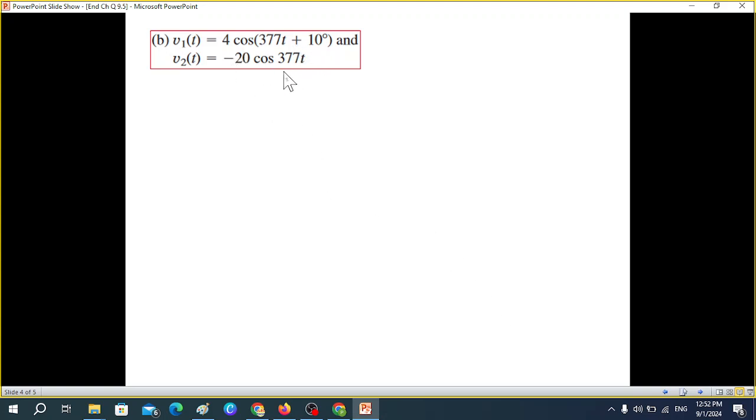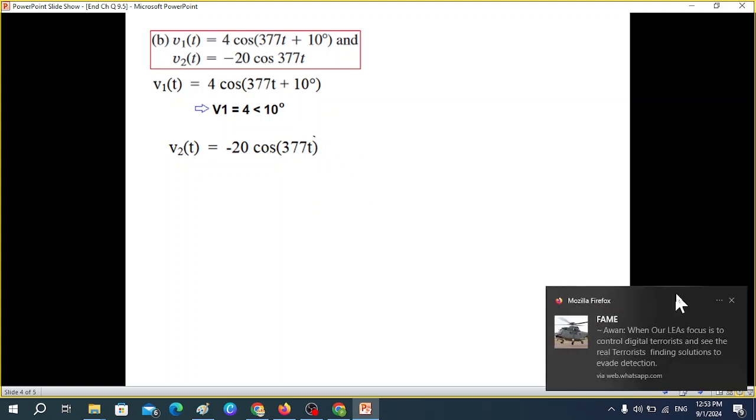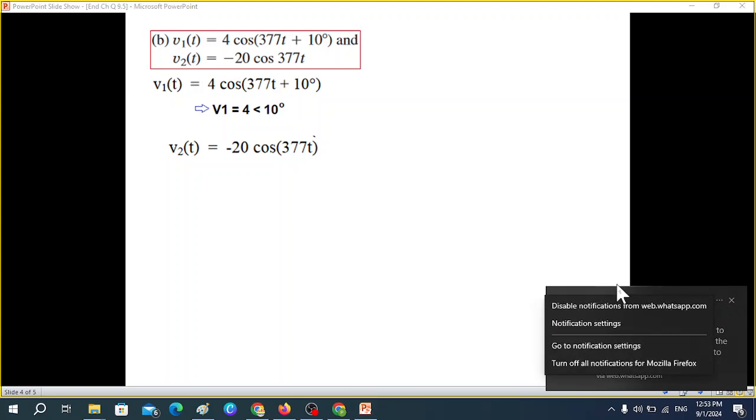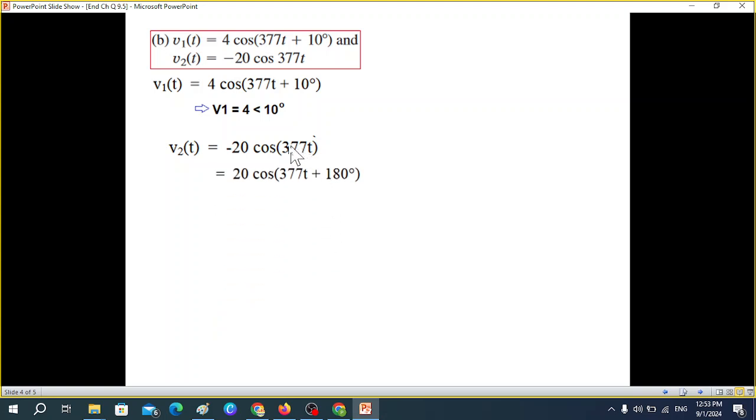Part (b): v1(t) = 4 cos(377t + 10°). V2 was already in proper form. For v2(t) = -20 cos(377t), we change the minus sign by adding plus 180°. Minus A is equal to A plus 180° or A minus 180°. In phasor form: V1 is 4 angle +10°, and V2 is 20 angle +180°.